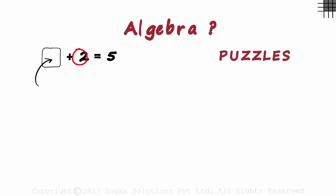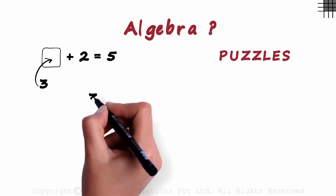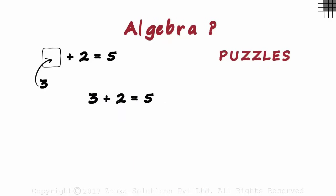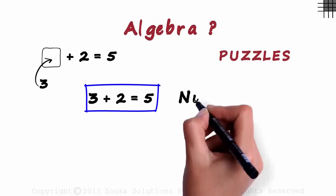Which number when added to 2 gives us 5? Simple. It's 3. We can say that 3 plus 2 equals 5. This thing we see here contains only numbers.